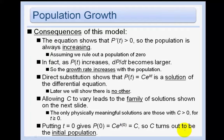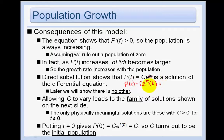Direct substitution shows that p equals ce^(kt) is a solution of the differential equation, and later we will show there is no other. So p'(t): the derivative of e^(kt) is e^(kt) times the derivative of kt, which is just k, because we're taking the derivative with respect to t. So that is the same thing as kp.